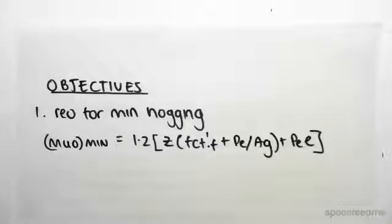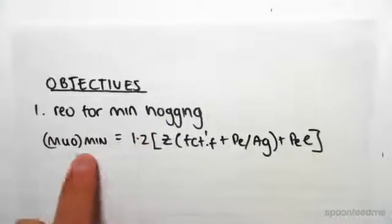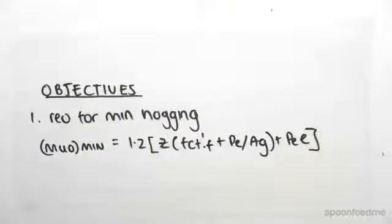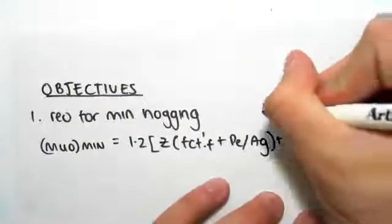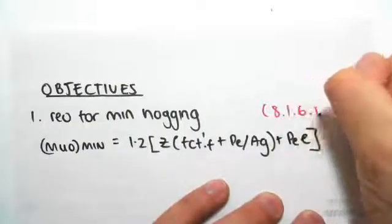The objective of this video is to find the reinforcement required for the minimum hogging case. Just like the minimum sagging case, we use this formula which is straight from the code — AS 8.1.6.1. I've just rewritten it over here, so once again this is from clause 8.1.6.1.